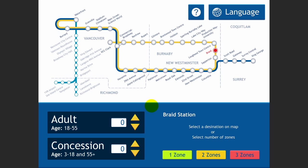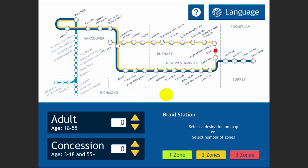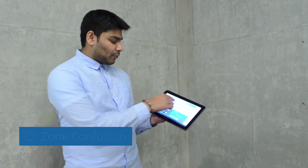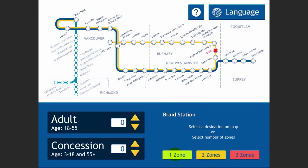One major change we've made with our interface is that we've incorporated the map onto the interface itself. This makes it much more simple for the new user to figure out the zone system. Zone confusion is completely removed since new users can now tap on whichever location they'd like to go to. For experienced users, there's an option to click the zone they would like to go to.